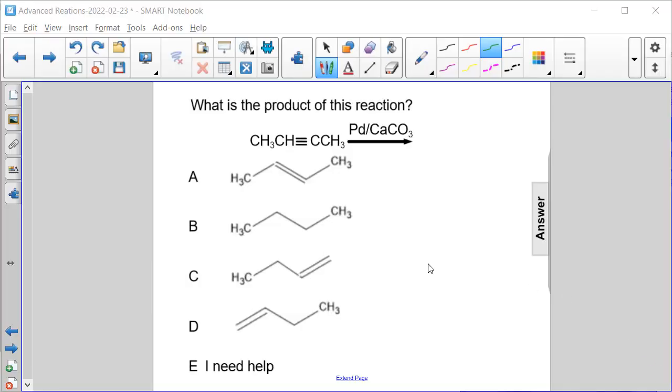What is the product of this reaction? So in this case we have one, two, three, four carbons, a triple bond between carbons two and three, so two butyne.